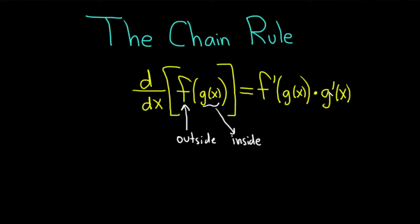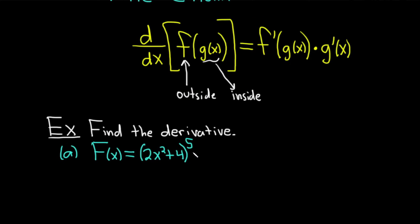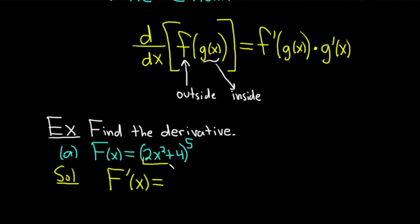Let's do several examples using the chain rule. Find the derivative. Part a, we've got big f of x equal to 2x squared plus 4, and that quantity is being raised to the fifth power. So f prime of x... let's identify the inside and outside functions. The inside function is going to be 2x squared plus 4. The outside function is the power function, something like x to the fifth, because you see you have that fifth power here. So what you do is you take the derivative of the outside, which is a power function, so you use the power rule.